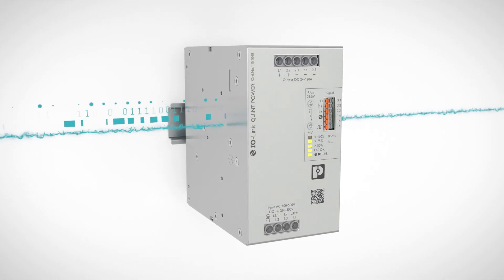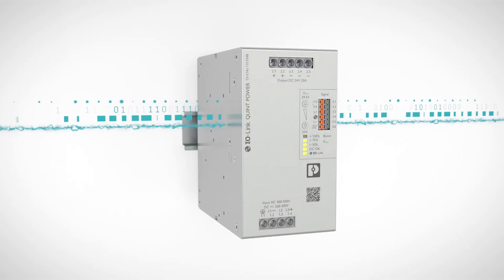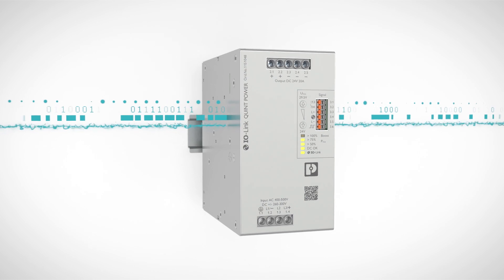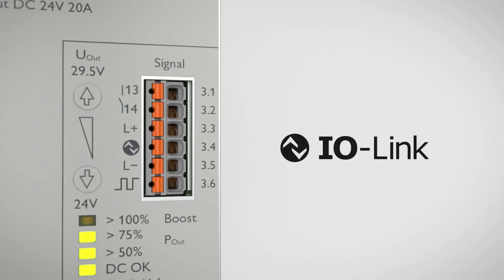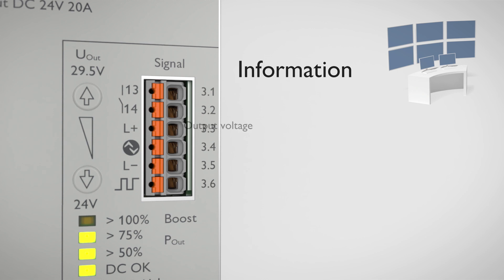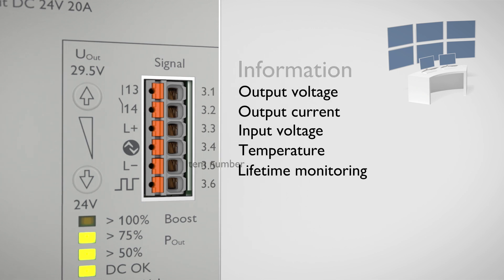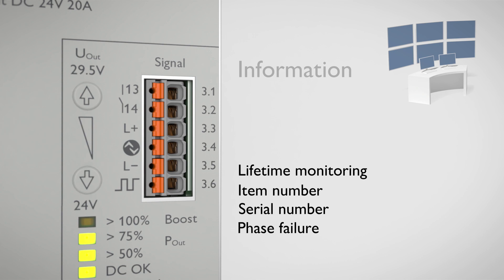Integrate the communicative Quint Power power supply in your industrial network. Via the IO-Link interface, all the operating data of the power supply is made available to the higher-level controller.